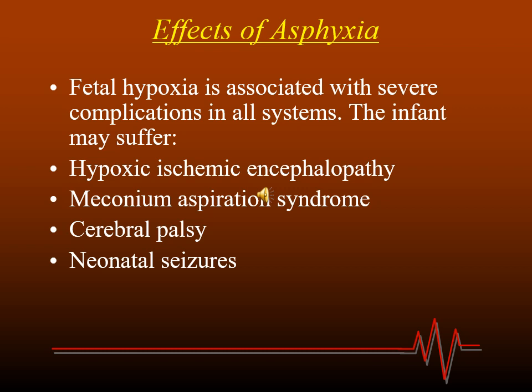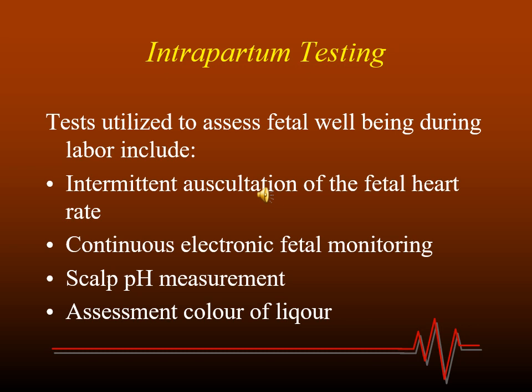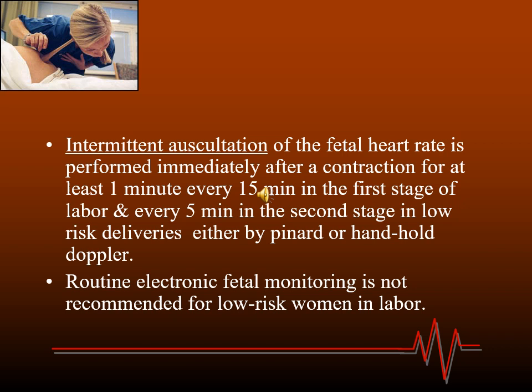Methods used for assessment of fetal well-being during labor include either intermittent auscultation of the fetal heart or continuous electronic monitoring, scalp pH measurement, or assessment of the color of the liquor. For low-risk groups — women who don't have the risk factors already mentioned — we use intermittent auscultation of the fetal heart rate during labor, using a Pinard stethoscope or handheld Doppler.